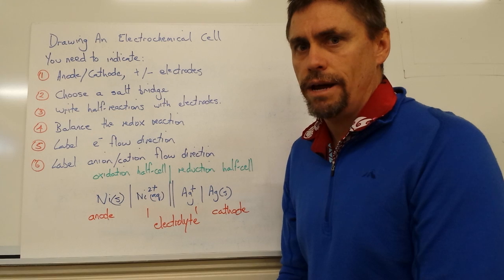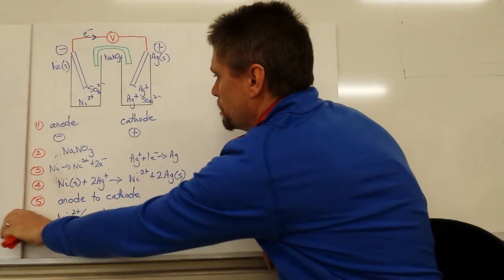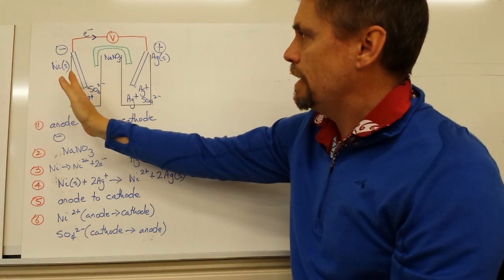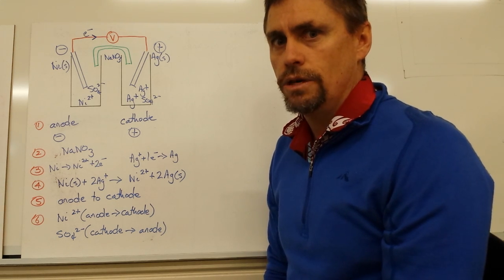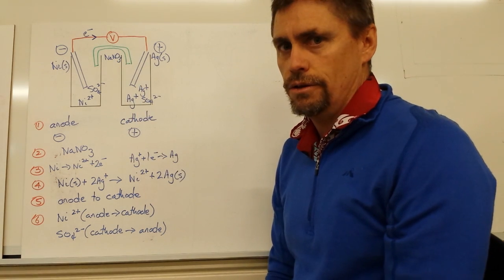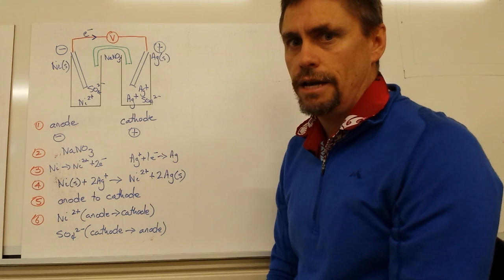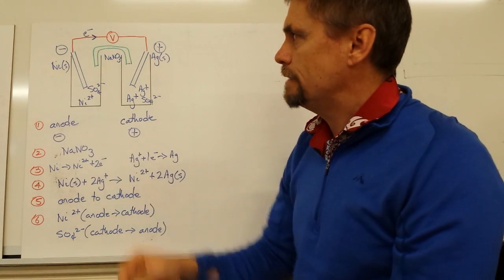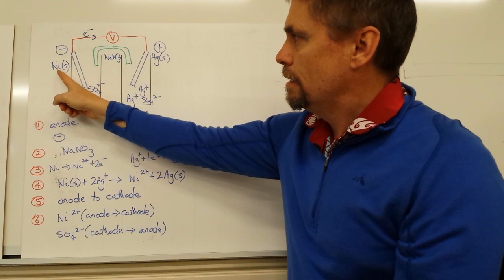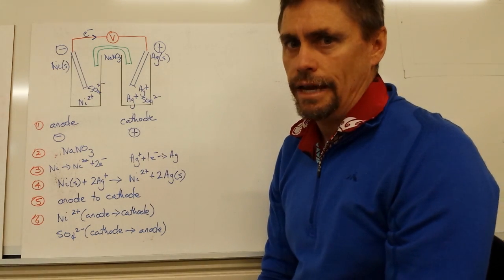The first thing we need to do is draw our two cells. By convention, we place the anode on the left — the oxidation part of the electrochemical reaction — and the cathode on the right, which is our reduction electrode. The anode is the negative electrode. In this case, we're going from nickel solid to nickel 2+, so we're giving up electrons. This is our source of electrons, hence the negative electrode.